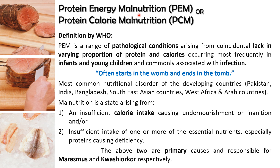Malnutrition is a condition that results from eating a diet in which one or more nutrients are not enough or are too much, such that the diet causes health problems. It may involve calories, protein, carbohydrate, fats, vitamins, or minerals. If insufficient nutrients are taken it may lead to under-nutrition; if overeating is present it leads to obesity. Both extremes fall under the heading of malnutrition. Protein energy malnutrition, or PEM — synonym: protein calorie malnutrition — is defined by WHO as a pathological condition when dietary proteins and calorie intake are deficient.